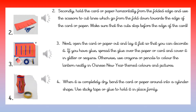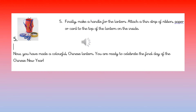Four: when it is completely dry, bend the paper or card around into a cylinder shape and use sticky tape or glue to hold it in place firmly. Five: finally, make a handle for the lantern — attach a thin strip of ribbon, paper or card to the top of the lantern on the inside. Now you have made a colorful Chinese lantern and you are ready to celebrate the final day of Chinese New Year.